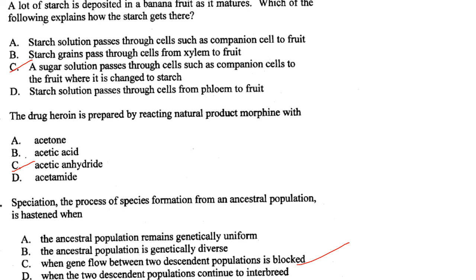Speciation, the process of species formation from an ancestral population, is hastened when gene flow between two descendant populations is blocked. Answer is option C.